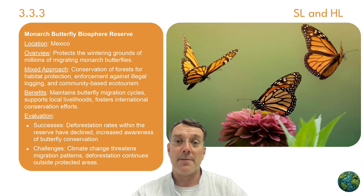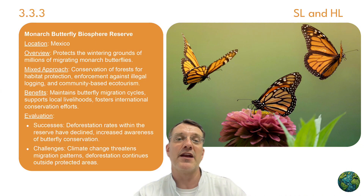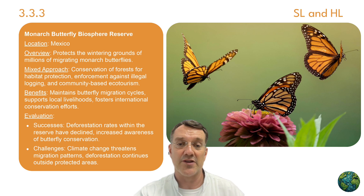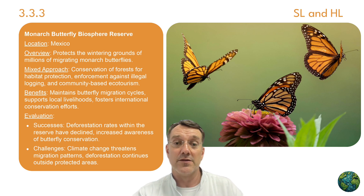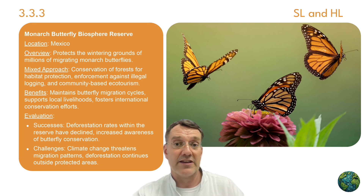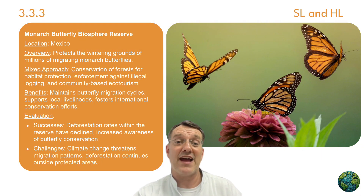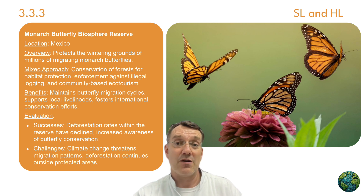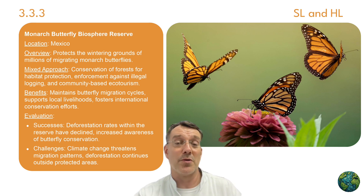The Monarch Butterfly Biosphere Reserve in Mexico protects the wintering grounds of millions of migrating monarch butterflies. The mixed approach includes forest conservation for habitat protection, enforcement against illegal logging, and community-based ecotourism. Benefits include maintaining butterfly migration cycles and supporting local livelihoods. Deforestation rates within the reserve have declined and awareness of butterfly conservation has increased, though climate change threatens migration patterns and deforestation continues outside the core protected areas.